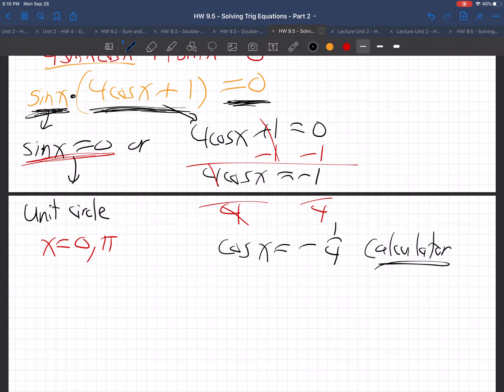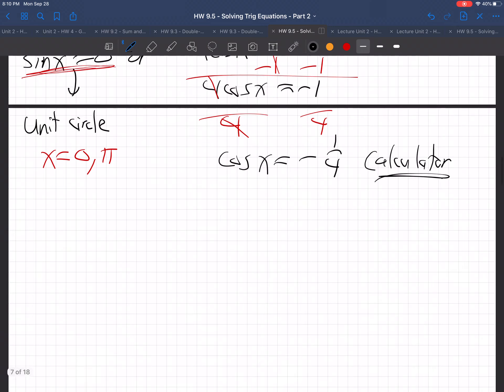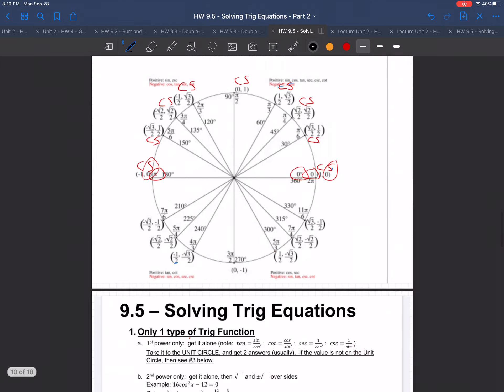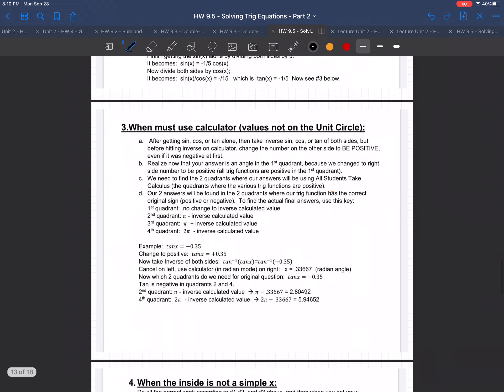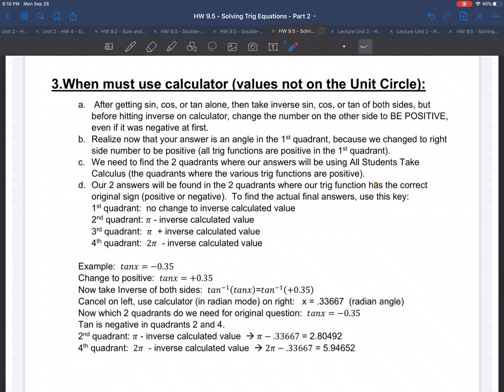But, specifically, we have a whole bunch of instructions. Have you learned how to do this on your calculator? I'll come on down here and look at the notes with you. Here it is. It's on number 3. When we must use the calculator because the values are not on the unit circle. That's us. Negative 1/4th is not on the unit circle. There's only numbers like half and square root of 3 over 2 and square root of 2 over 2. And 0 and 1. There's no negative 1/4th. So what do you do? After getting the sine, cosine and tangent alone, take the inverse of both sides. But before hitting the inverse on the calculator, change the number to be positive, even if it was negative at first.